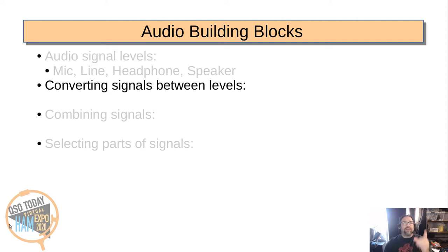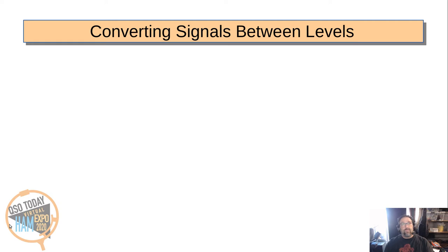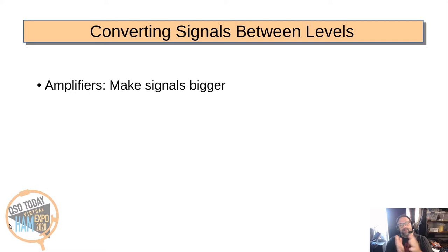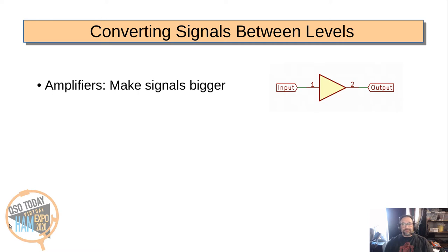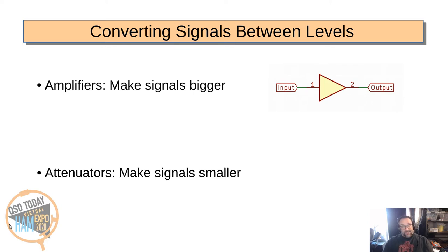The next thing we're going to talk about is converting between these levels. Sometimes we want to make a signal bigger, and we use an amplifier to do that — to go from a weaker signal to a stronger signal. In a block diagram, an amplifier looks like a triangle with an input and an output. You may have seen an operational amplifier — an op amp — in a circuit diagram, which also looks like a triangle. When you see a triangle with an input and an output, that means it's an amplifier.